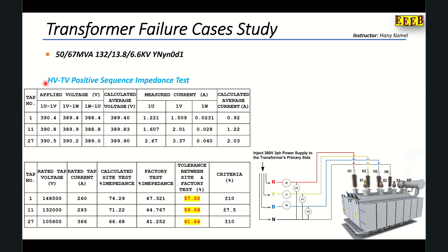When we perform the HV to tertiary positive sequence short circuit impedance test, we apply three-phase voltage with neutral to the HV side of the transformer — H1, H2, H3, and H0 — and we short the tertiary winding. In this case we measure the short circuit impedance positive sequence between the HV winding and the tertiary winding.